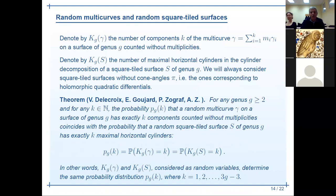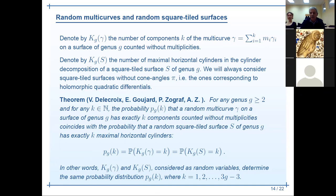The answers for multi-curves are exactly the same as for square-tile surfaces: the probability that a random multi-curve on a surface of genus g has exactly k components equals the probability that a random square-tile surface of genus g has exactly k maximal horizontal cylinders.